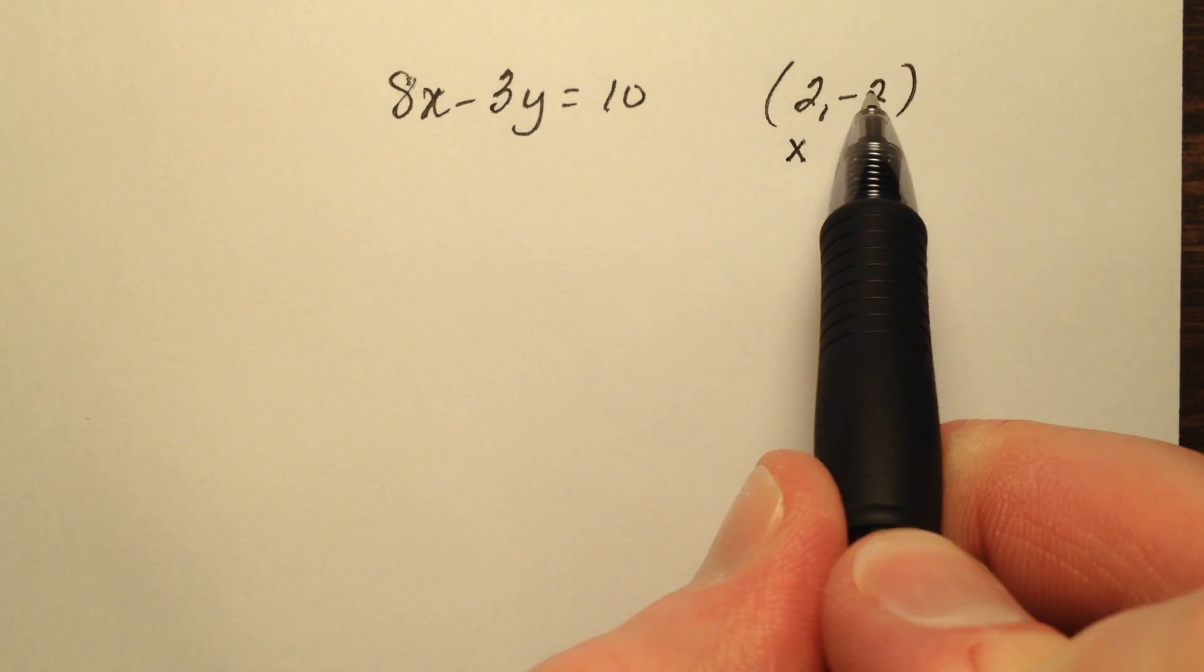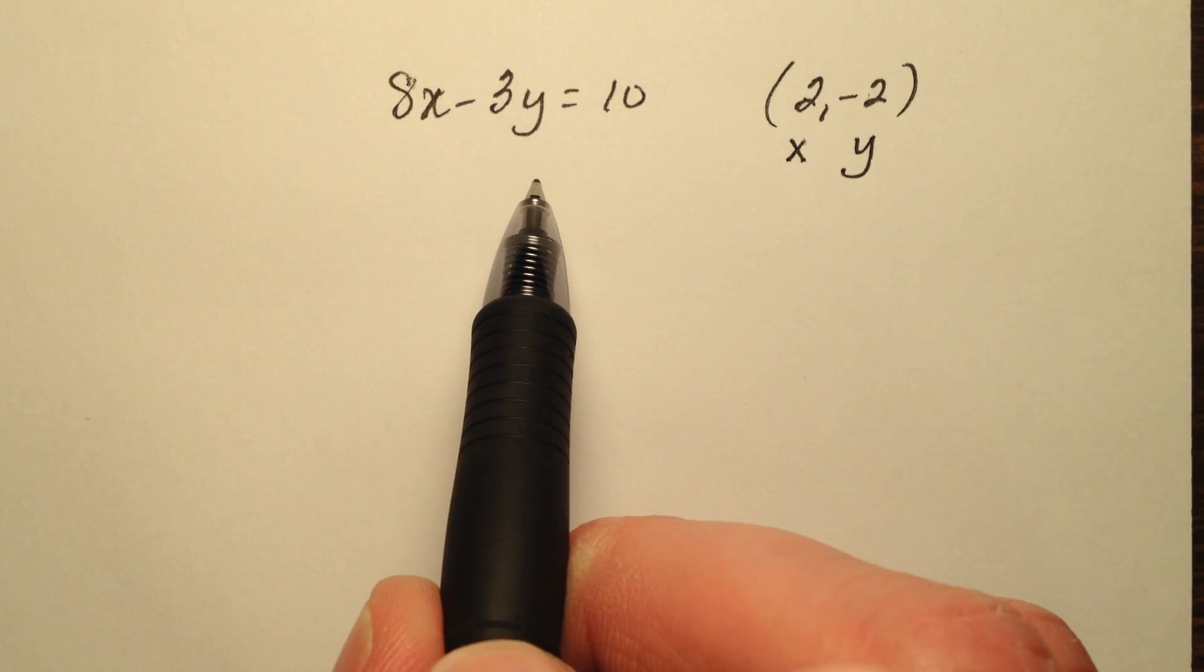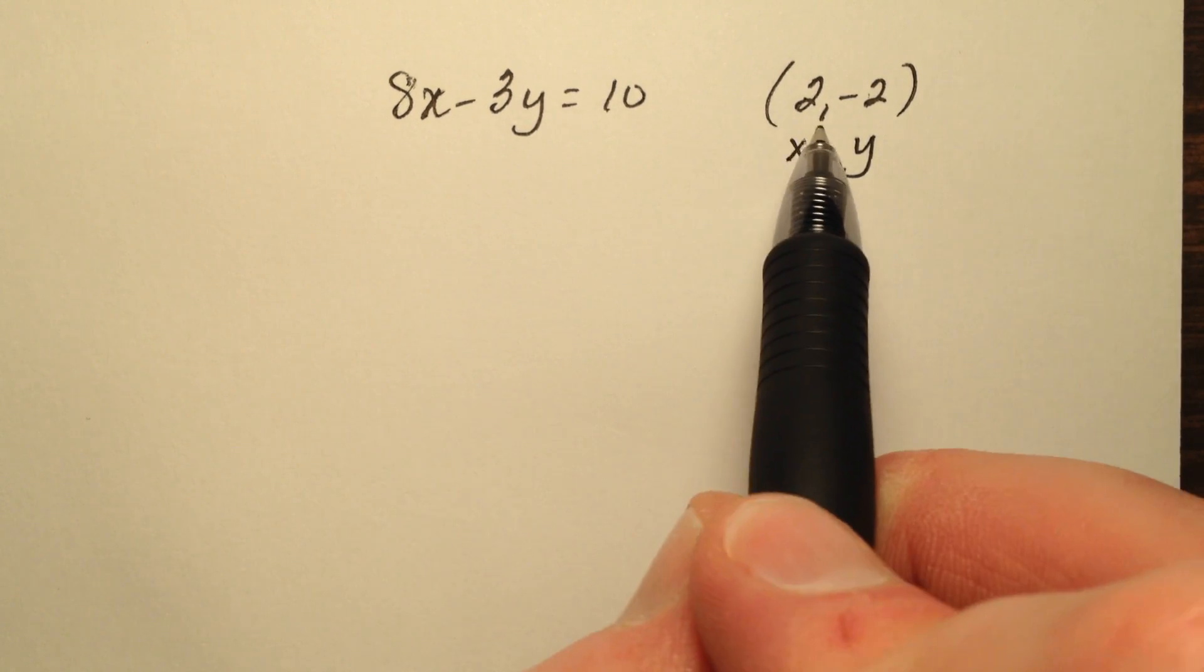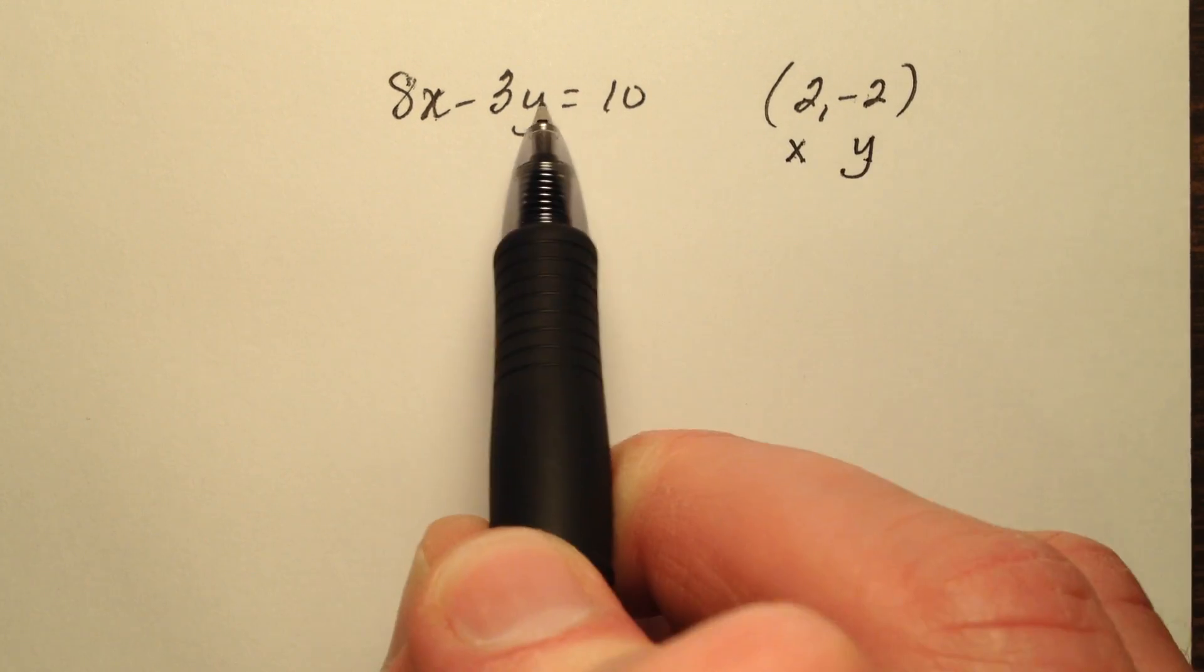So what I'm going to do is plug in or substitute these values into this equation and see if the equation is going to be true or false. So 2 is going to be plugged in for x and negative 2 will be plugged in for y.